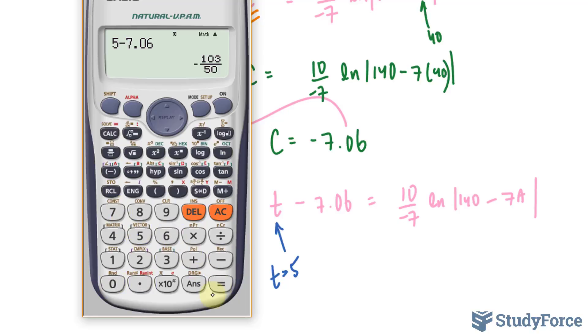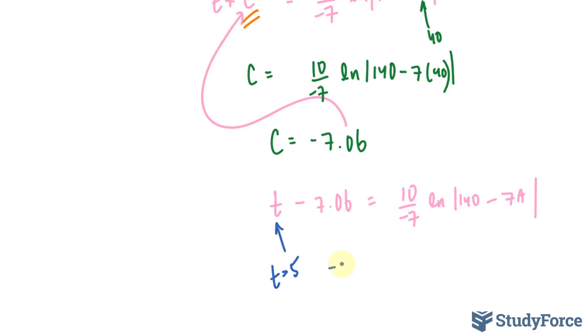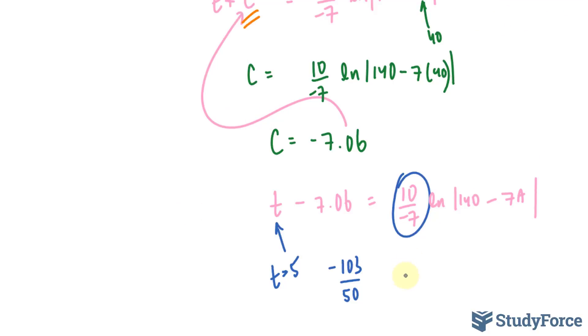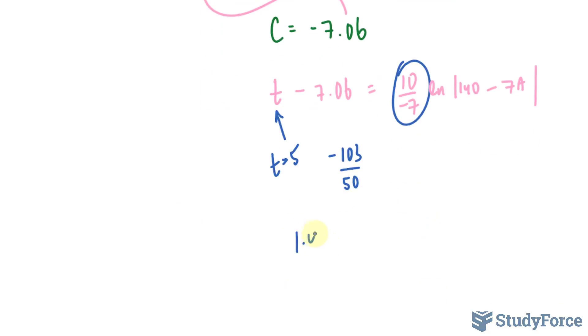That gives me negative 103 over 50. Negative 103 over 50. And I need to get rid of this part, so I'll divide both sides by 10 over negative 7. So dividing this by 10 over negative 7 gives me the following, 1.442.